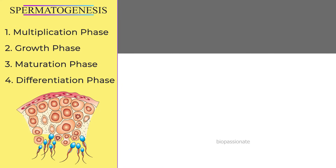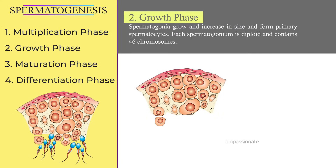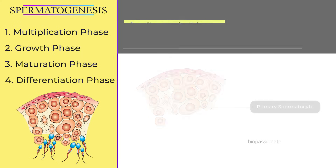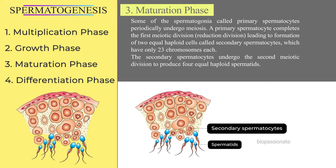During the growth phase, spermatogonia grow and increase in size to form primary spermatocytes. Each spermatogonium is diploid and contains 46 chromosomes. During the maturation phase, primary spermatocytes periodically undergo meiosis — the first meiotic division leading to the formation of two equal haploid cells.